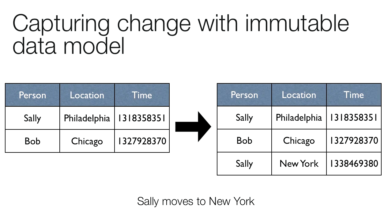It would look different in an immutable world. Instead of capturing where a person lives now, you capture where they lived as of a certain time. So Sally lives in Philadelphia as of one certain time, and Bob lives in Chicago as of another certain time. And when Sally moves to New York, you add a brand new data record saying Sally lives in New York as of this more recent time. The fact that Sally now lives in New York does not change the fact that she used to live in Philadelphia — both of these facts can be true at the same time.